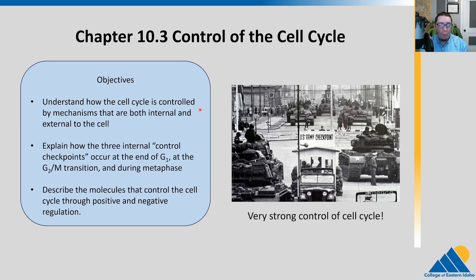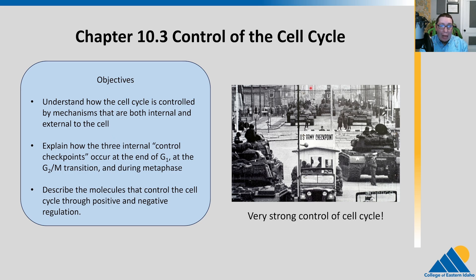In chapter 10.3, we're going to talk about control of the cell cycle — what leads to the different steps in there. In the last section, we talked about the cell cycle phases. We're going to talk about what we call the checkpoints. We need to talk about why we have super strong control of the cell cycle. This picture of Checkpoint Charlie in Berlin might seem a little hyperbolic, but it really illustrates the strong control over the checkpoints in the cell cycle.